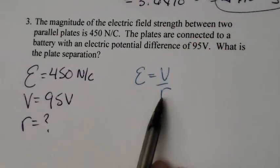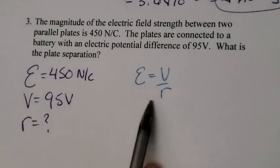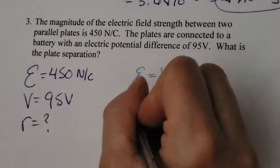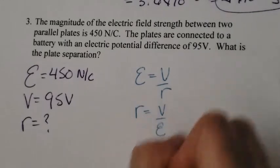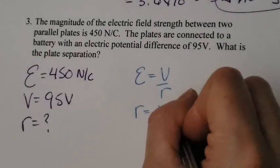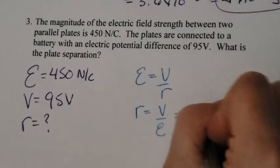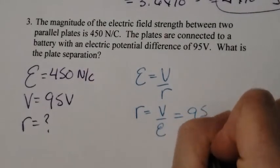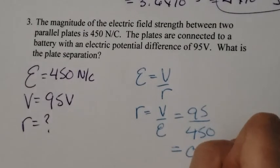I want to get R all by itself, so I have to get it out of the denominator. So what I'm going to do is multiply both sides by R, and then divide by the electrical field intensity. So I get R is equal to V over this electrical field. Plug in what I know. So V is 95 divided by 450, and that gives me 0.21 meters.